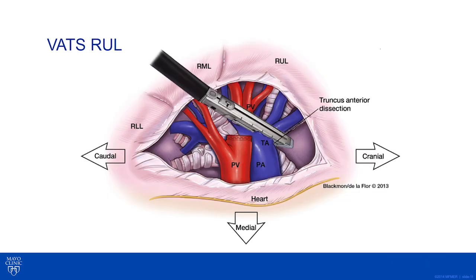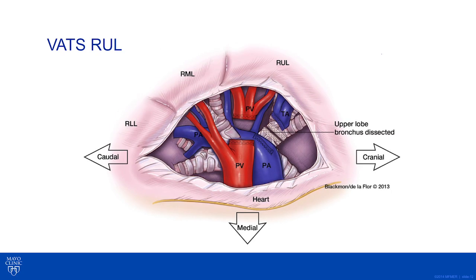The next step involves dissection, encircling, stapling, and dividing the truncus anterior branches of the right upper lobe. These can be taken all at once or separately. This particular patient had three separate truncus anterior pulmonary artery branches taken individually because of densely adherent lymph nodes. The last two steps involve division of the bronchus and the posterior ascending pulmonary artery. Sometimes it is easier to take the posterior ascending pulmonary artery first and then the bronchus.